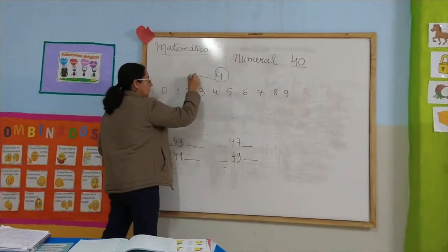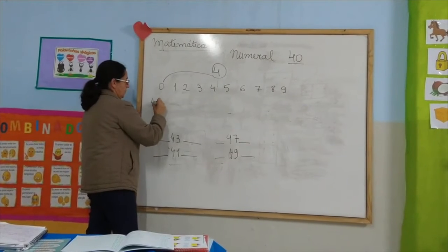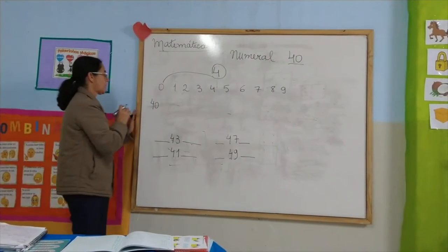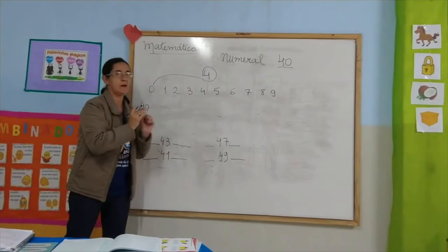So, this number 4, he will be going to 0. I form the number 40. This is the family that we will learn today.